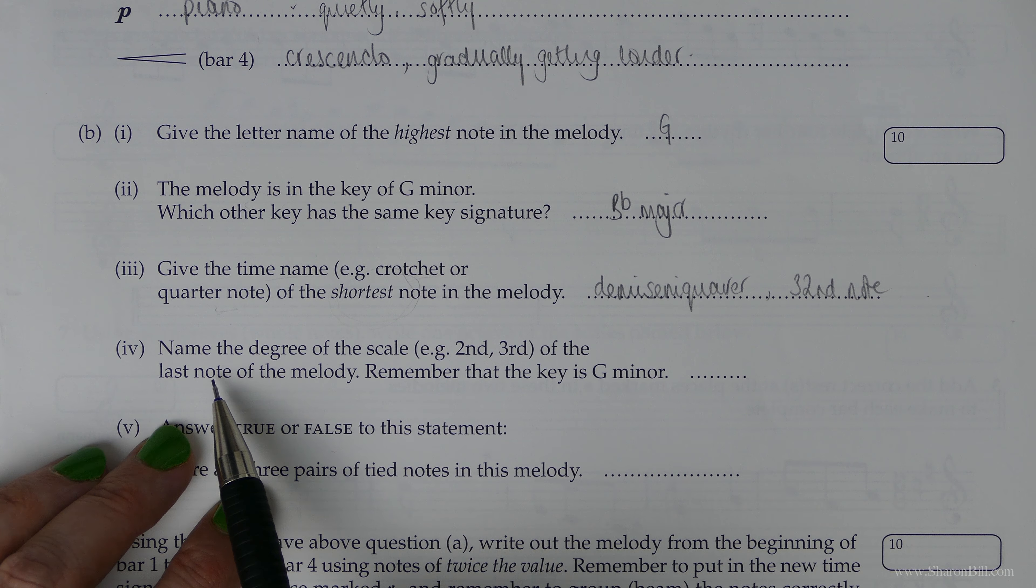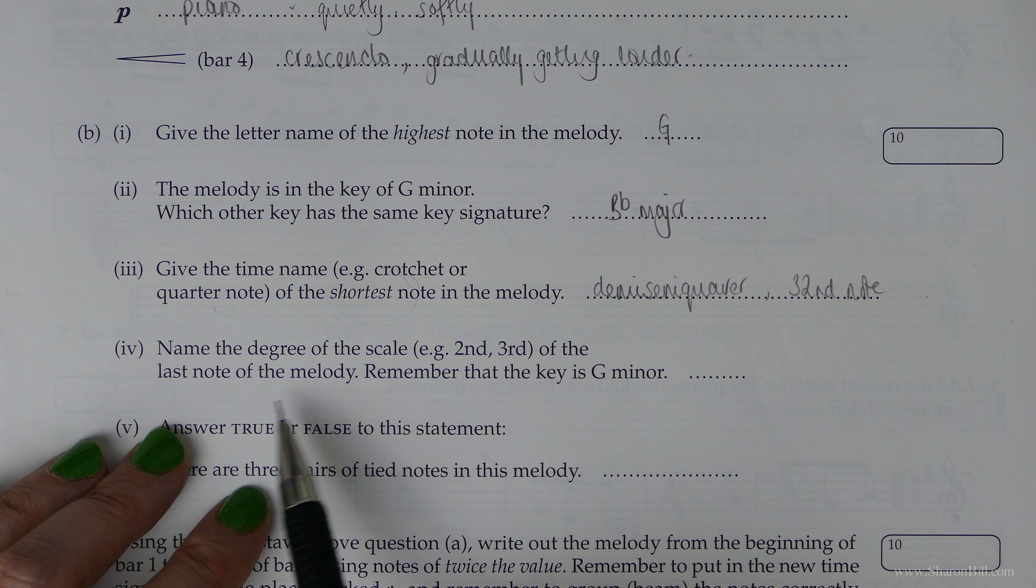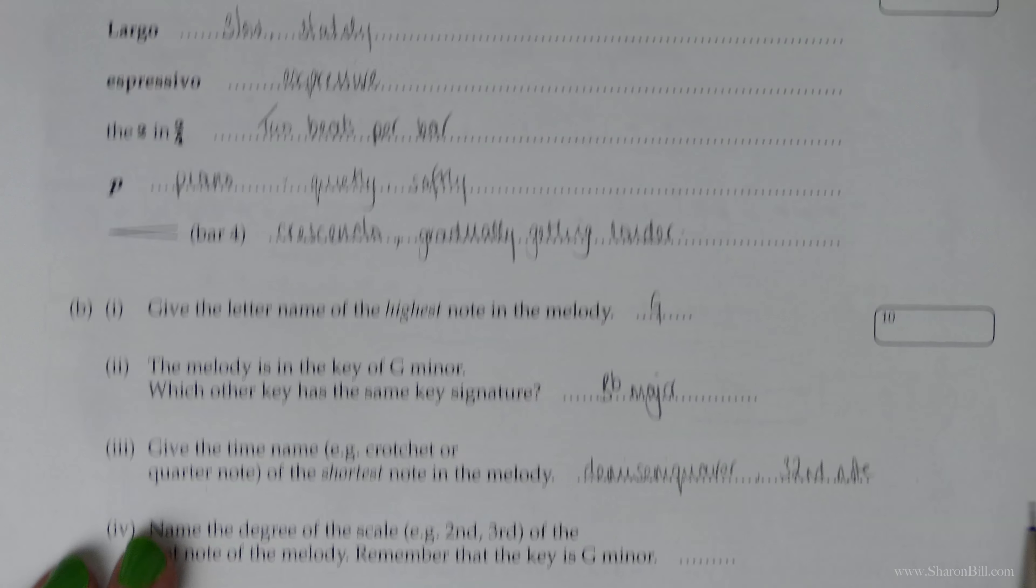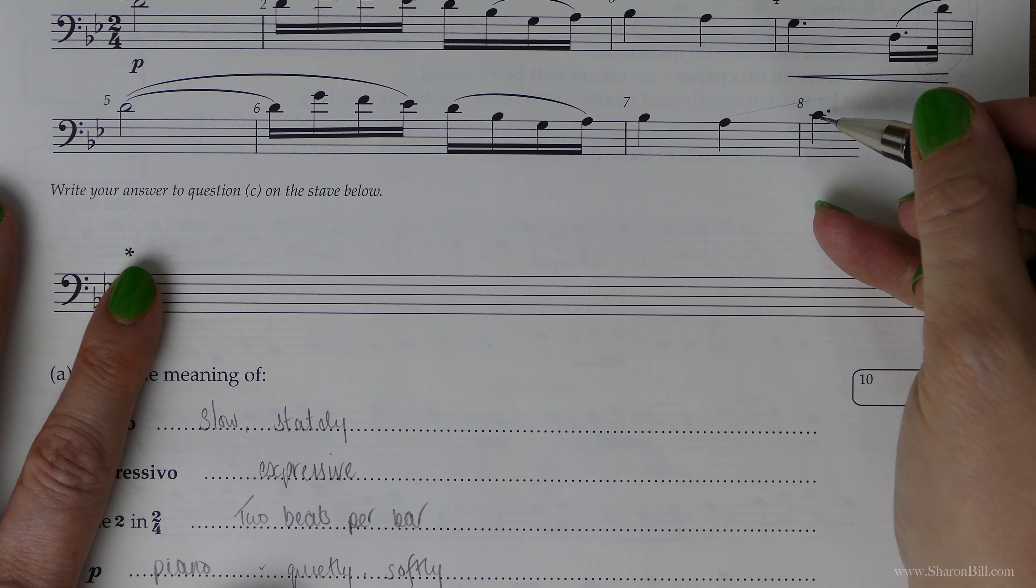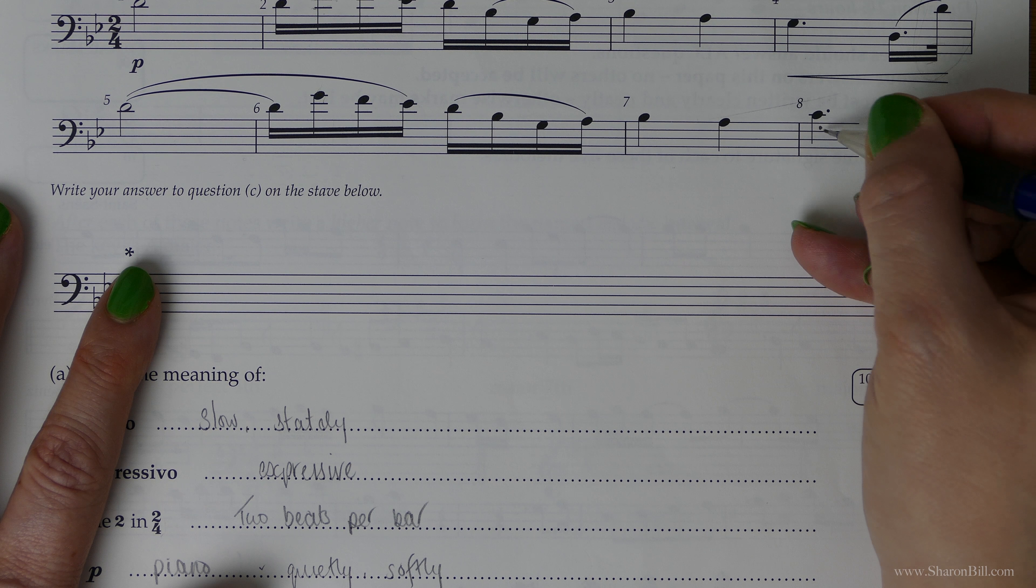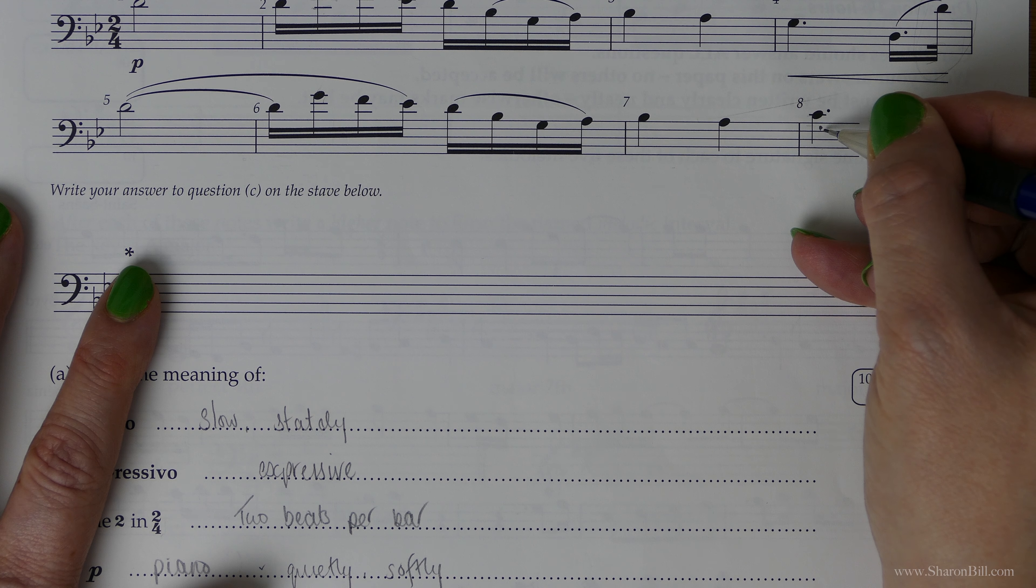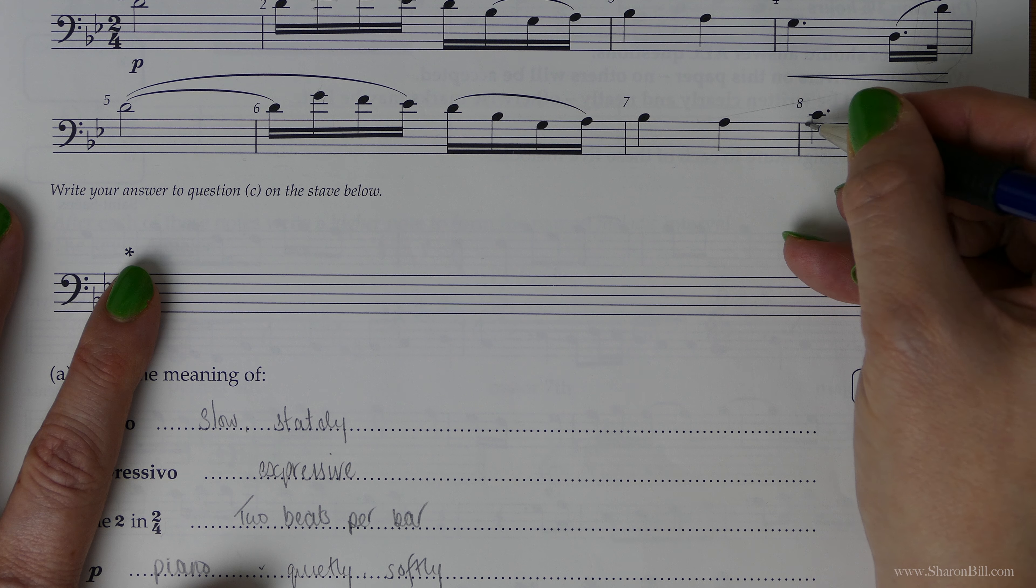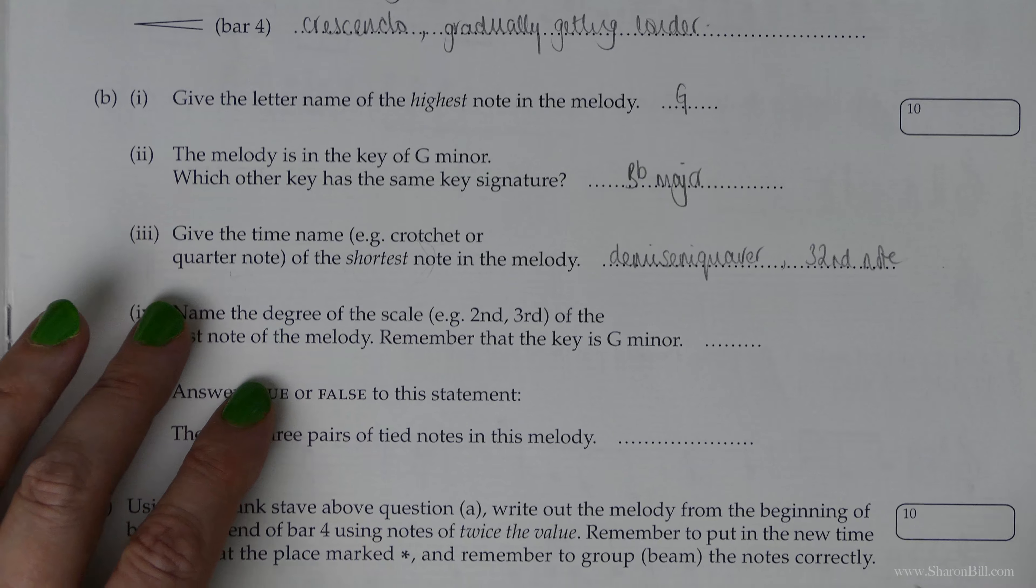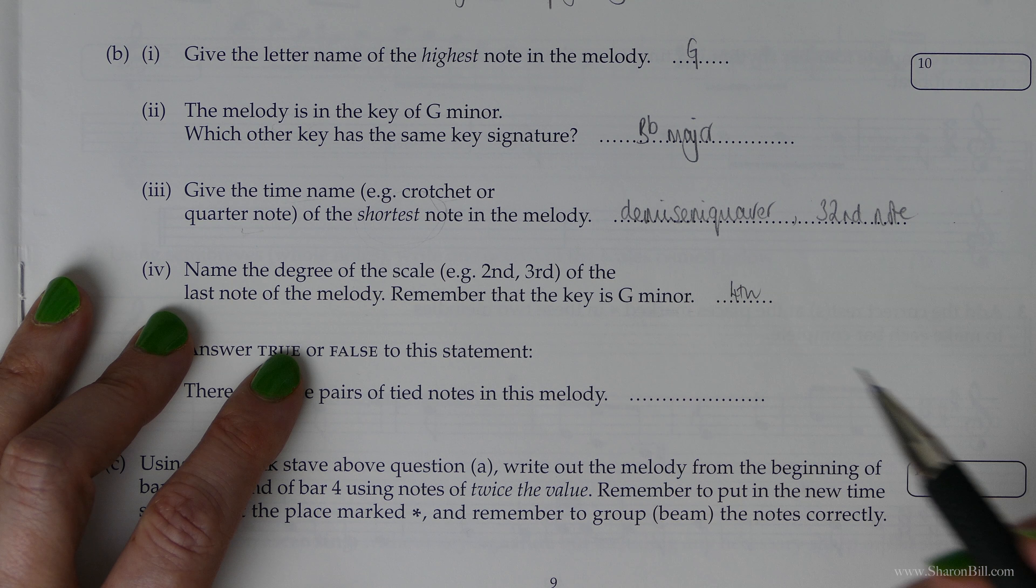Next question: name the degree of the scale, so we're counting the steps of the scale of the last note of the melody. Remember that the key is G minor, so G is the first degree of the scale. Here we have a G. All cows eat grass. G is one, A, B, C—line, space. So space is one, two is the line, three, four. We're on a fourth: G, A, B, C. You've just always got to be careful to count G as one.